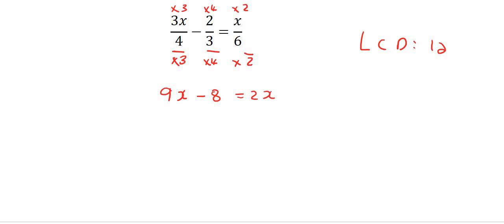Now I can solve. So I take the 2x over. So it becomes 9x minus 2x equals 8. 7x equals 8. Therefore x would be 8 over 7.